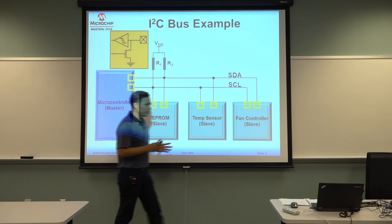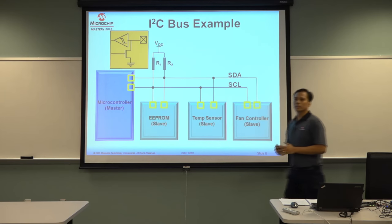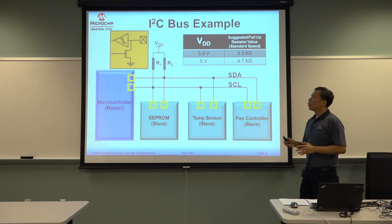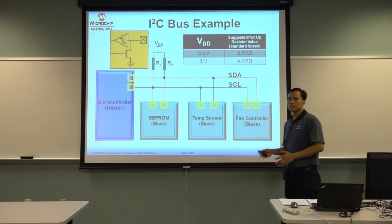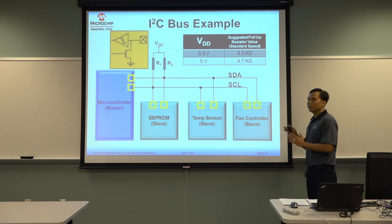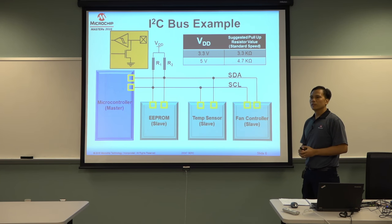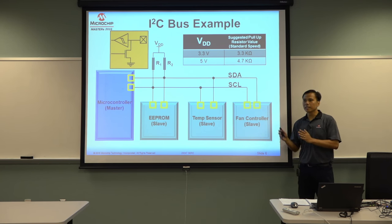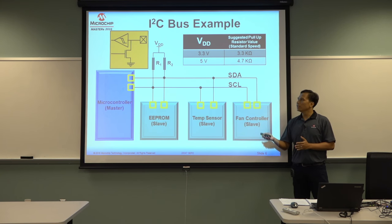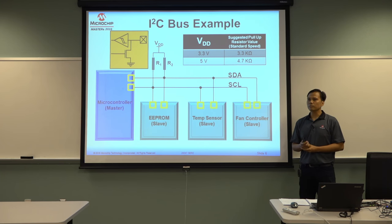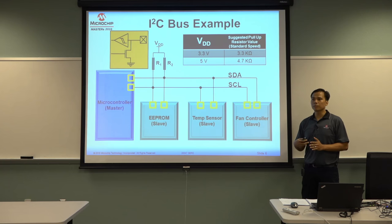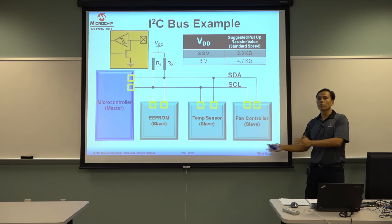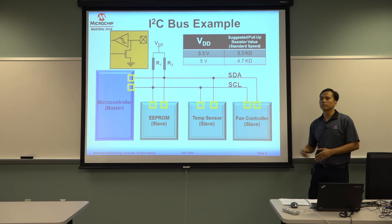A common question is: what are the common values of R1 and R2? The answer is it depends, mainly on your VDD. For standard speed at 100 kHz, if you have a VDD of 3.3 volts, a recommended value is 3.3k. If your VDD is 5 volts, a recommended value is 4.7k. It's a guidance — you may have to increase or lower it depending on the speed and VDD. It is a general rule of thumb; approximately one milliampere is sourced to the pin, which is enough to drive any input pins. If you have more capacitance or higher speed, you might have to tweak that. If you have questions, feel free to interrupt me.